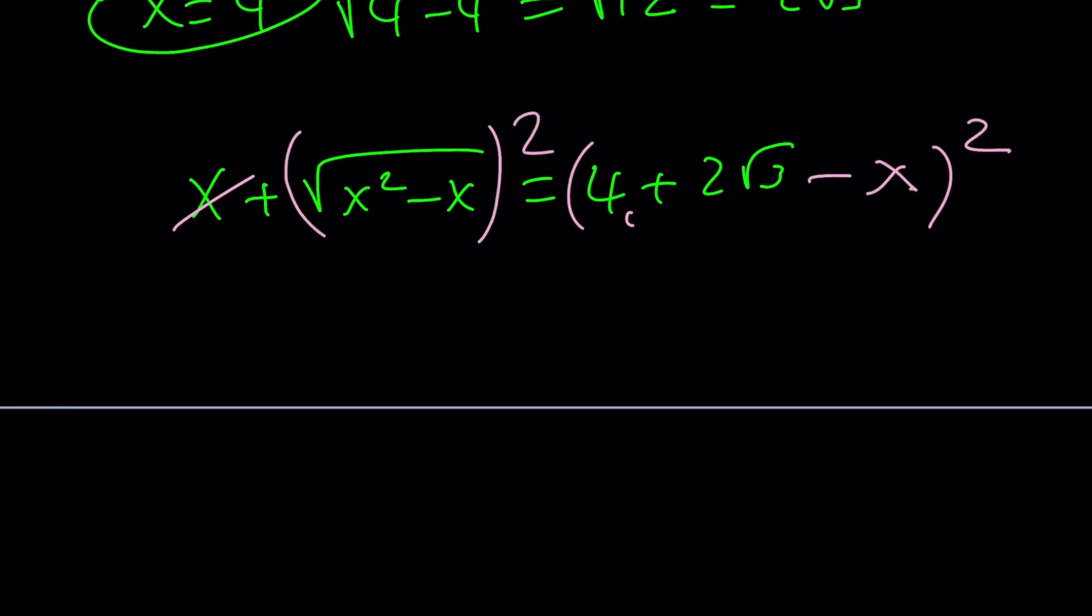And that gives us the following. We could probably take this as a whole so we don't have to deal with a plus b plus c squared. If you square the left hand side, you get x squared minus x. And the right hand side is going to give us a squared, which is 4 plus 2 root 3 squared, plus x squared minus 2 times x times 4 plus 2 root 3.